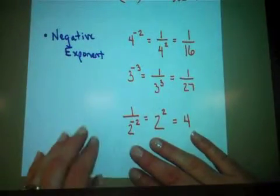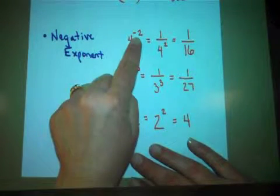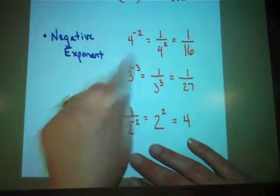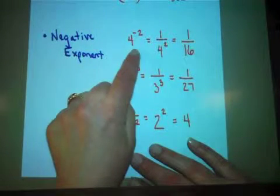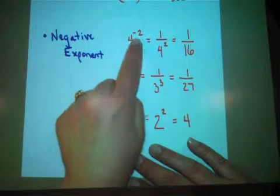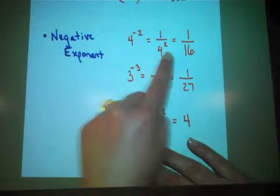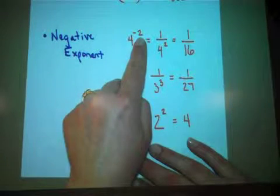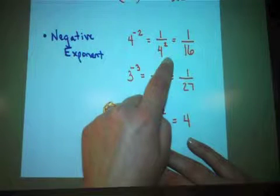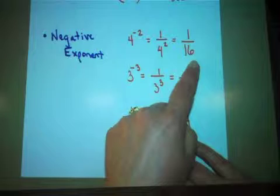Then we have negative exponents. The negative exponent forces the value to move to the other part of the fraction. Right now, this is over an invisible 1, meaning it's in the numerator. The negative in the power is going to force it down into the denominator. So 4 to the negative 2 becomes 1 over 4 squared. 4 squared is 4 times 4, or 16, so it simplifies to 1 over 16.